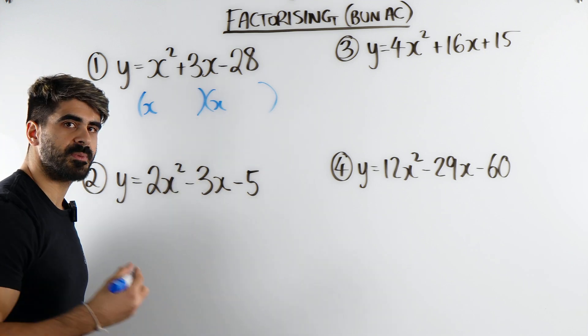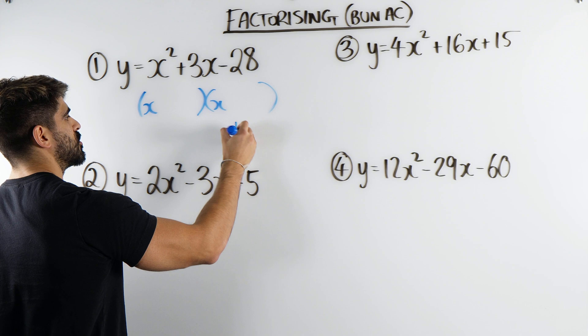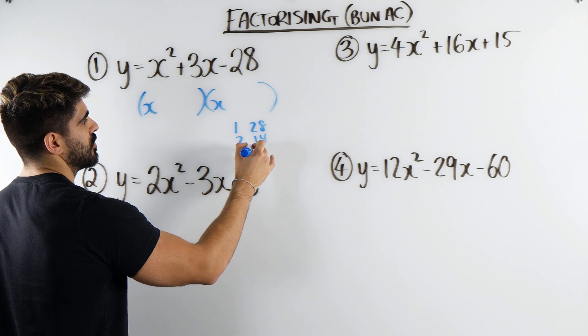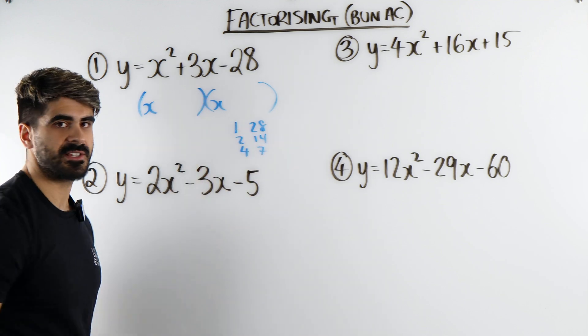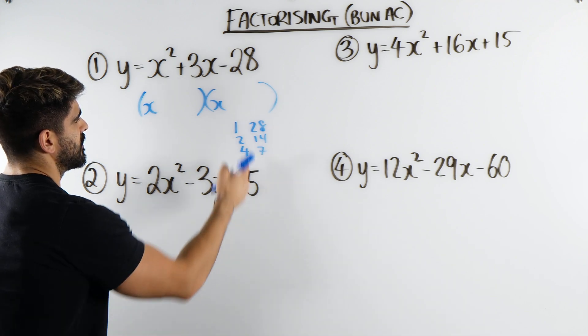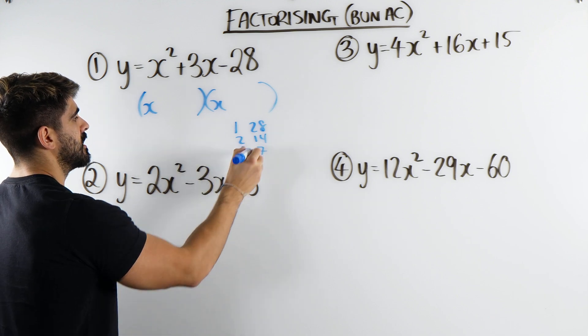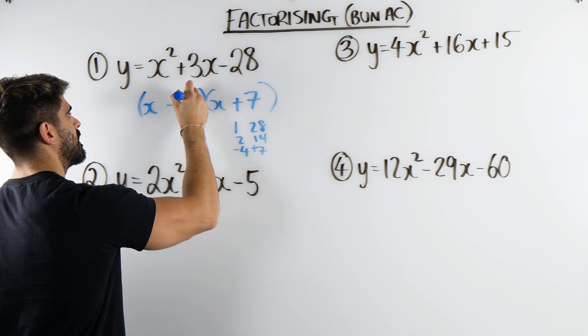Then we're just thinking what multiplies to give you 28 but adds to give you 3. Now our options for 28 are 1 and 28, 2 and 14, 3 doesn't go, 4 does go 7 times and then you'll return back to 7 then we're done. Now obviously none of these two are going to make 3, it's going to be this one. How do you make plus 3 is if you have plus 7 minus 4. And that's factorized.